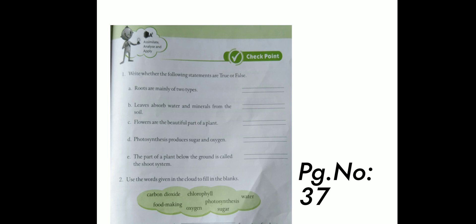A question, roots are mainly of two types. Next, leaves absorb water and minerals from the soil. C is, flowers are the beautiful parts of a plant. D question, photosynthesis produces sugar and oxygen. E question, the part of a plant below the ground is called the shoot system.